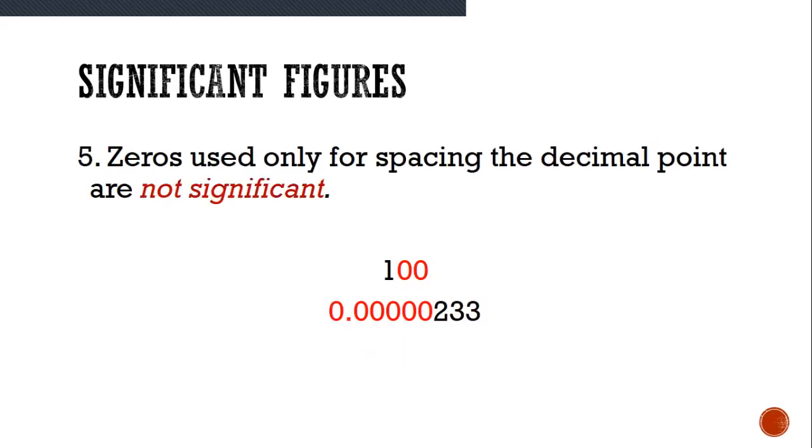Zeros used only for spacing the decimal point are not significant. I know that this is going to seem really odd, but you have to imagine them like placeholders. This one is only 100 because we've put these two placeholders behind it. If you want these digits to be significant, all you have to do is put a decimal point behind it. And all of a sudden, all of these digits would be significant.